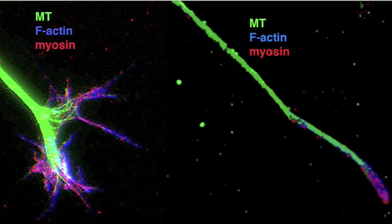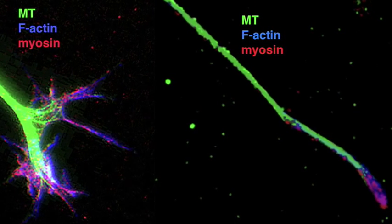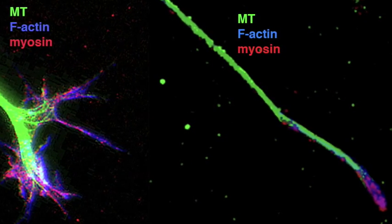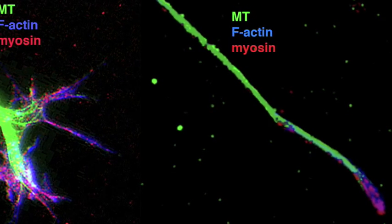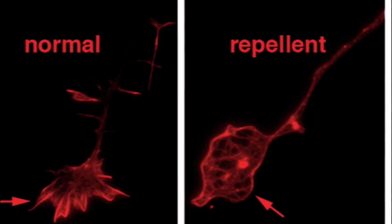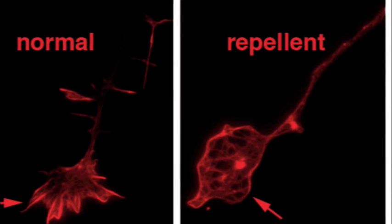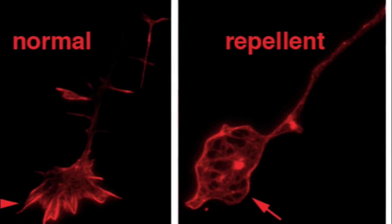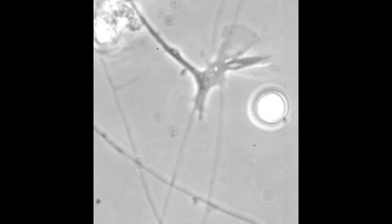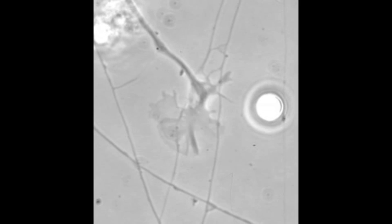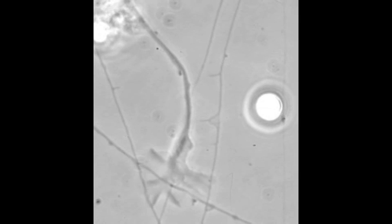Cytoplasmic signals relayed through EphA receptors trigger intense contraction between actin filaments and myosin-2 motors in the growth cone and axon shaft. In addition, signals from EphA receptors suppress actin filament polymerization that advances the growth cone leading margin. Thus, gradients of repellent ligands orient growth cones as they navigate adhesive pathways to their synaptic targets.